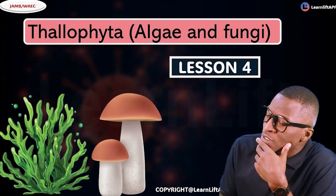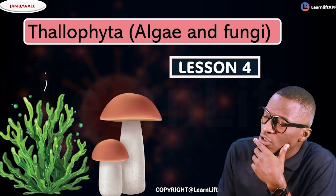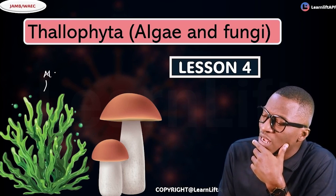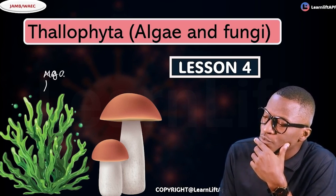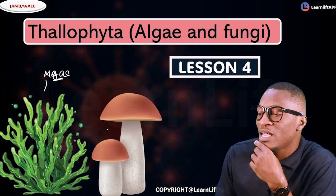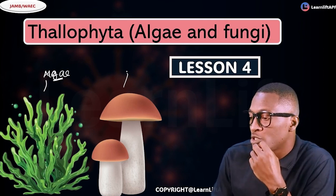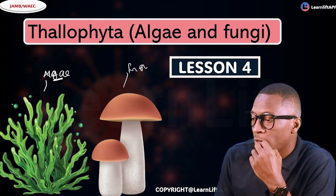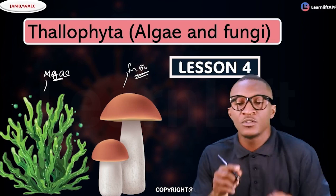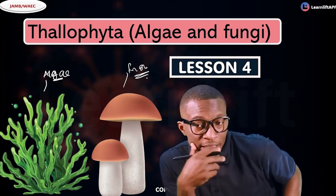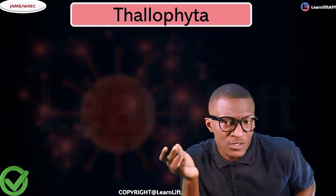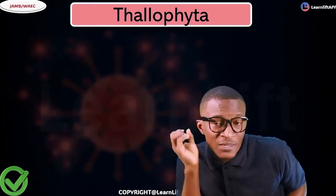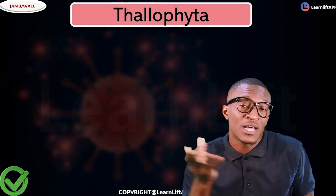The one that is green is called algae. Algae are chlorophyllous — they are green. But the one that is not green, like a mushroom, is called fungi. Take note of the difference between your algae and your fungi. Both of them are called thallophytes.